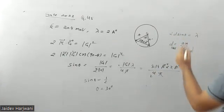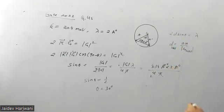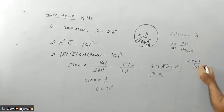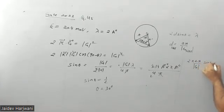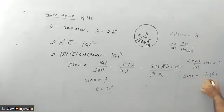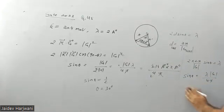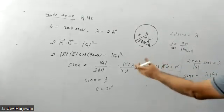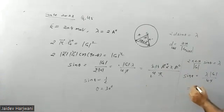Put this value here, so 2 into 2π magnitude of G sine theta equals λ. We need sine theta, so that will be again λG upon 4π. With the values we just calculated, this comes equal to half, and theta is 30 degrees.